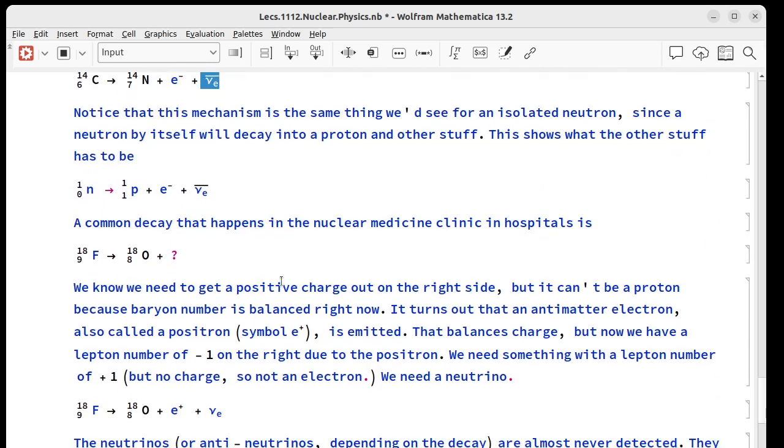So this is also what we would see if we had a neutron just hanging out by itself. Neutron by itself will turn into a proton. Notice that baryon number is conserved. Charge is going to be conserved because we get 0 here and 1 plus minus 1 here. And then lepton number is conserved, 1 and minus 1.